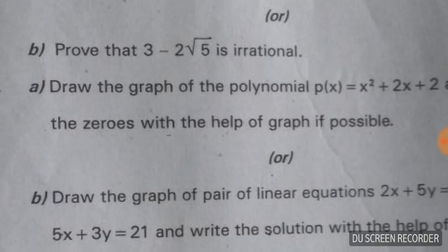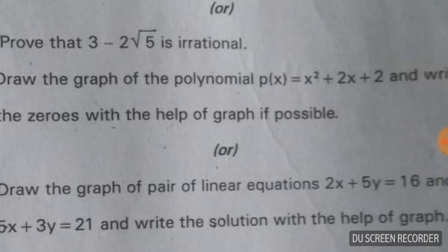Prove that 3 - 2√5 is irrational. You know this concept — solve this question.